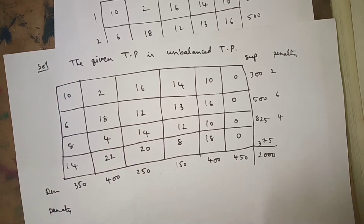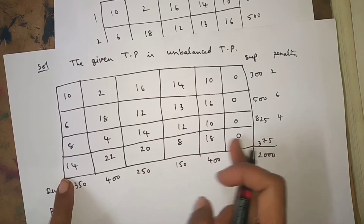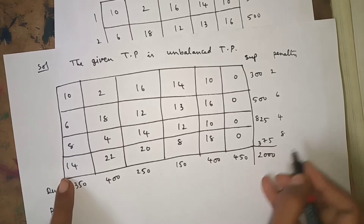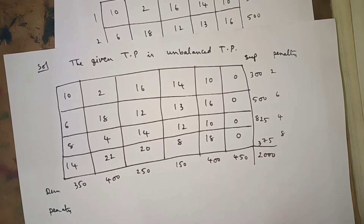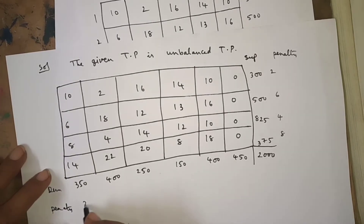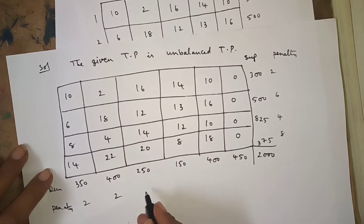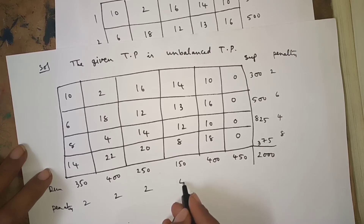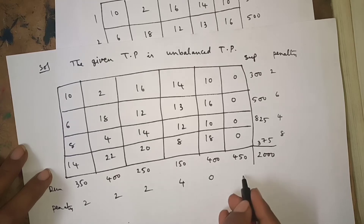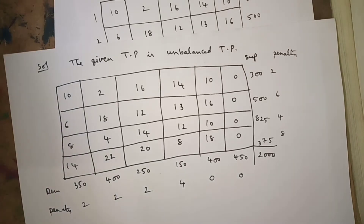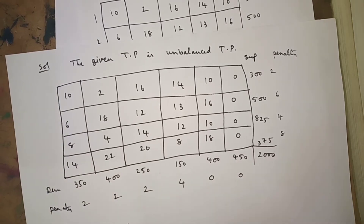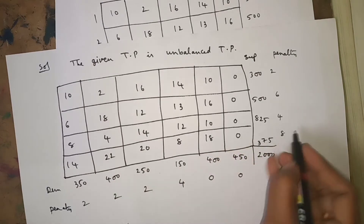Now we calculate penalties. For the last row, two least numbers are 0 and 8, penalty is 8. First column: difference between two least numbers 8 and 6 is 2; 4 and 2 is 2. Here two least numbers are 12 and 14, giving 2; 8 and 12 giving 4; 10 and 10 giving 0. We calculate penalties for all rows and columns. The highest penalty is 8.